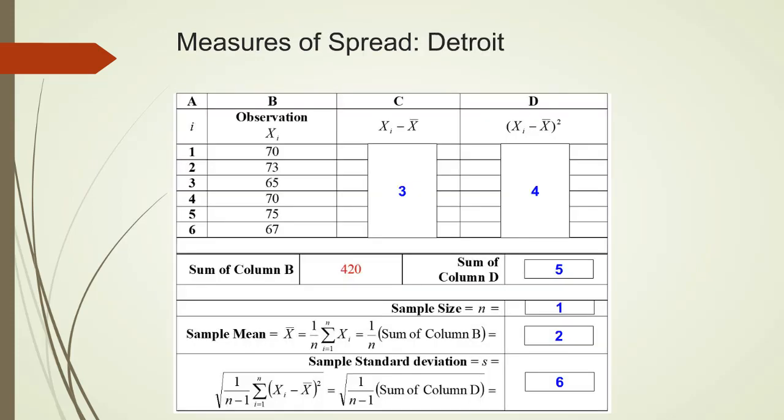This is a worksheet to calculate the standard deviation for Detroit. That's going to be the number 6 in the worksheet. To find number 6, we would start from number 1 first. That's going to be the sample size. And then move on to number 2. That's the sample mean. And then number 3, the difference between each individual x and x bar. And then the square distance for number 4. And then we're going to sum them up and divide it by sample size minus 1. And don't forget to take square root of that to get the very last entry. And that's going to be the sample standard deviation.